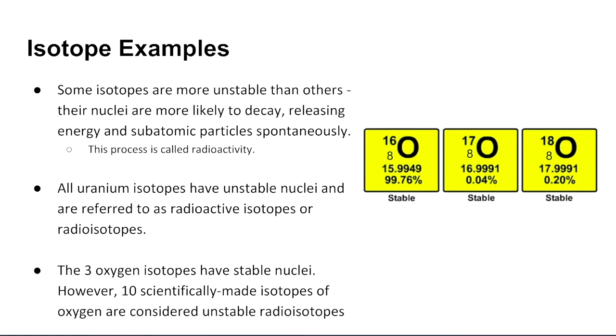Some isotopes are more unstable than others. Their nuclei are more likely to decay, releasing energy and subatomic particles spontaneously. This process is what's referred to as radioactivity. All uranium isotopes have unstable nuclei, and therefore, they are referred to as radioactive isotopes, or radioisotopes for short. Oxygen isotopes have a very stable nuclei. However, 10 scientifically made isotopes of oxygen are considered unstable radioisotopes.